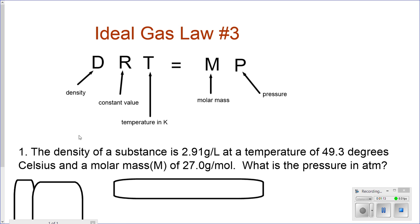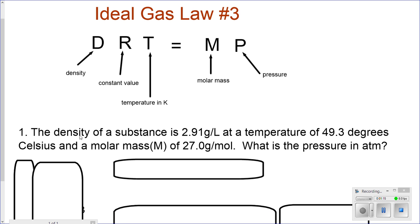The question says, the density of a substance is 2.91 grams per liter. Therefore, we'll have to use this law. At a temperature of 49.3 degrees Celsius, convert that into kelvins, please. And a molar mass of 27.0 grams per mole. What is the pressure? I'm looking for pressure.